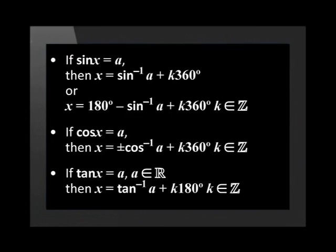Let's look at those solutions again. Take a moment to copy down the general solutions for each trigonometric ratio. In each case, x is the unknown and a is the known value. Remember to write down that k is an element of integers.